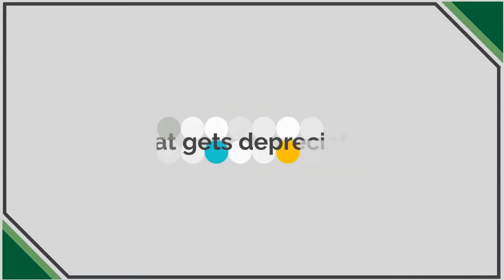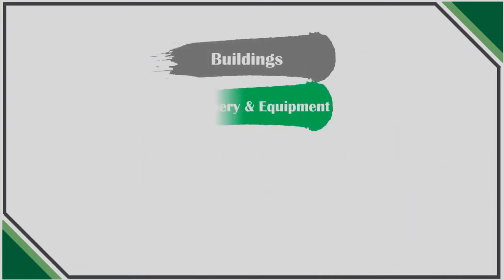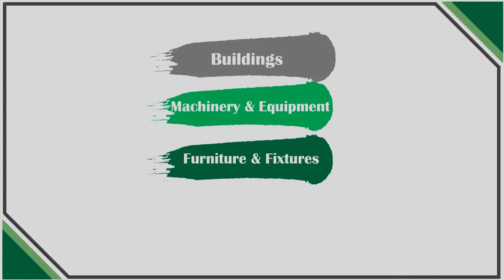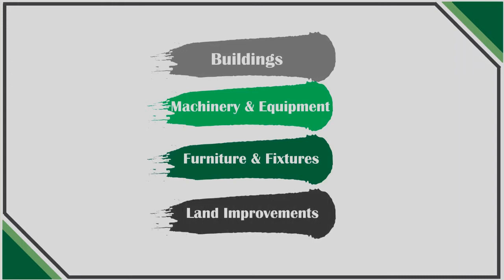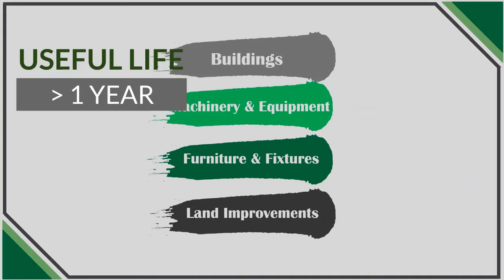Let's first start looking at what's depreciated. Buildings, machinery and equipment, furniture and fixtures, and land improvements are all different assets considered when doing depreciation. These are significant assets with significant value that have an estimated useful life beyond one year.